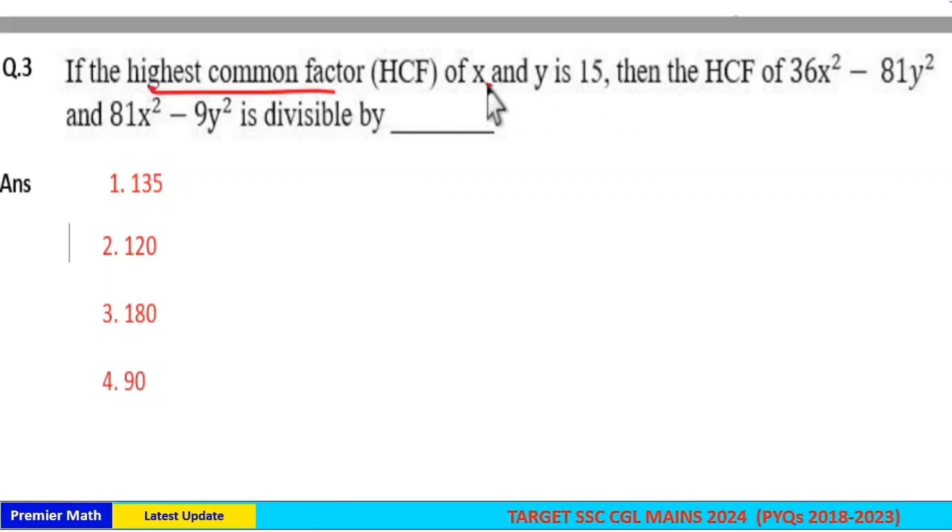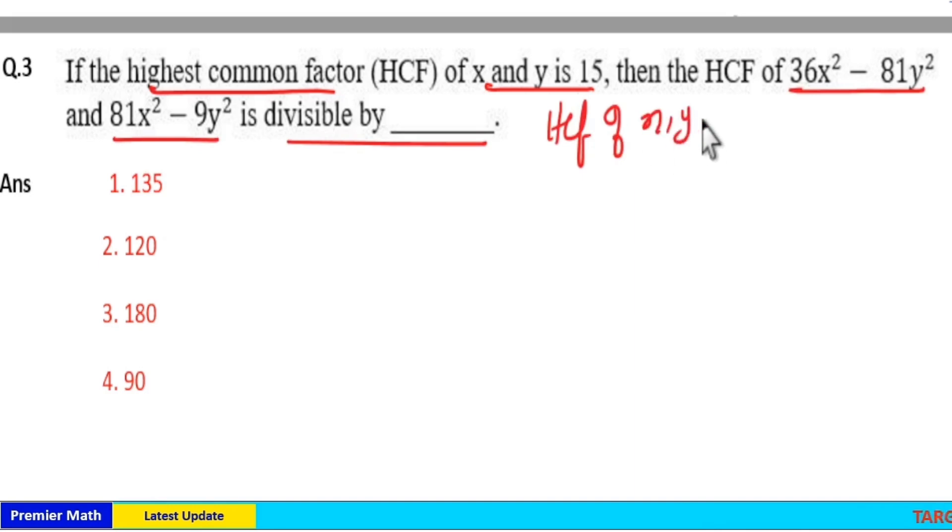If the highest common factor of x and y is 15, then the HCF of 36x² - 81y² and 81x² - 9y² is divisible by what? Here, HCF of x and y is 15.